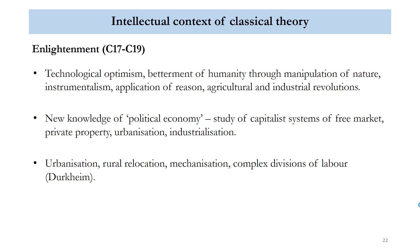If we date the period in question, we're going to start in the 17th and 19th century during a period of intellectual development known as the Enlightenment. The Enlightenment is characterized by the emergence of a perspective often referred to as techno-optimism or technological optimism — the view that technology is what will see us through, that the betterment of humanity is secured through the dominance of nature and the manipulation of resources for human needs. It's very much an instrumental view of nature.